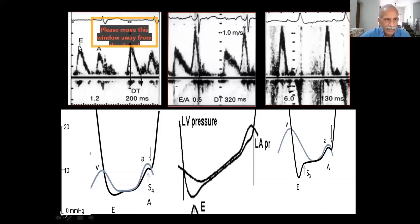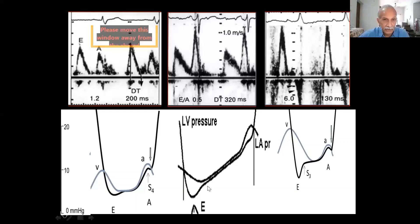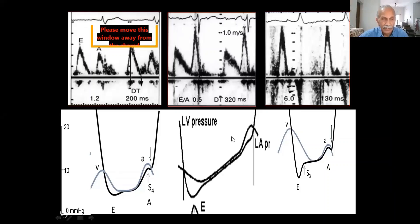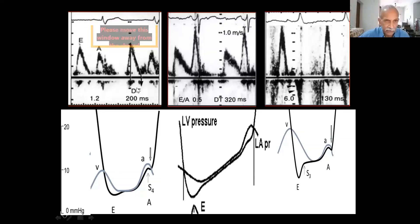The normal E-wave velocity can be anywhere from 0.8 to 1.2, or 1.5 in a very young person. Whereas in older adults, as this relaxation decreases, the E-velocity becomes lower and deceleration time is prolonged, more blood is left and the A-wave is taller. So we use the E-wave deceleration time and E/A ratio to characterize normal versus abnormal filling — and even within abnormal filling, is it drastically or mildly abnormal?